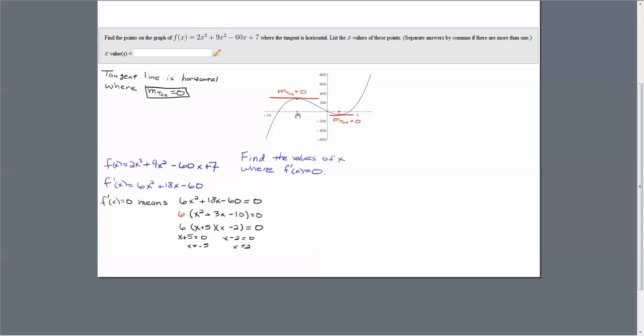Those are the two points, and if you look back at our plot, that matches what we have geometrically. There's one at x = 2 where the tangent line is horizontal. There's -5 where the tangent line is horizontal.